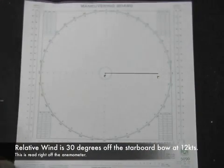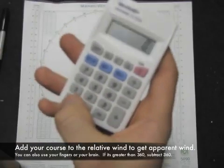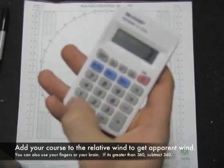Off the anemometer we read 30 degrees off the starboard bow at 12 knots. So you've got to determine the apparent wind. You can do that with a calculator, with your fingers, with your brain, depending on how it is.